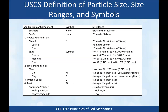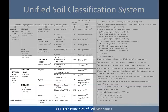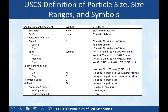This is the USCS definition for particle size ranges and symbols. One criticism of the USCS is that it's not very good at dealing with boulders and cobbles, which can be important for subgrade. There's no symbol for those, though they do have grain sizes: boulders are greater than 300 mm, cobbles are 75 to 300 mm. We don't do a grain size curve for those materials — classification is based purely on particle size.